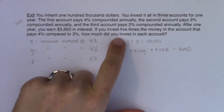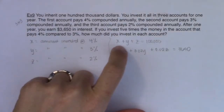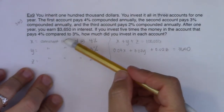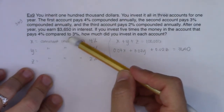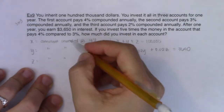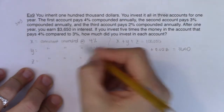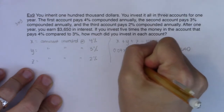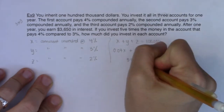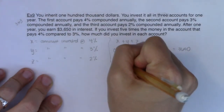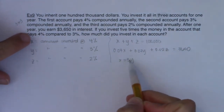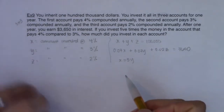The third condition says you invest five times as much money in the 4% account compared to the 3% account. So the 4% account has five times what's in the 3% account — meaning x equals 5y. That's my third equation.